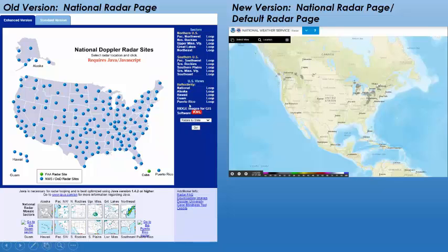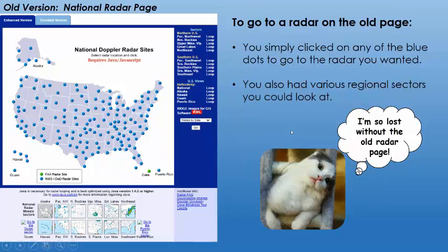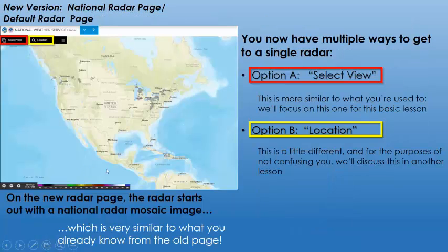On the left we've got the current — or the one that's going away — national radar page, and on the right is the new radar page that's the default national radar page. On the old version, to go to a radar you basically just clicked on a blue dot to go to the radar that you want, and you had all these different regional sectors. On the new version, there are actually multiple ways to get to a single radar, and it starts right out with a composite or mosaic image of the national radar. We have option A — Select View in the red box — which is the most similar to what you're used to, and that's what we're going to focus on in this video.